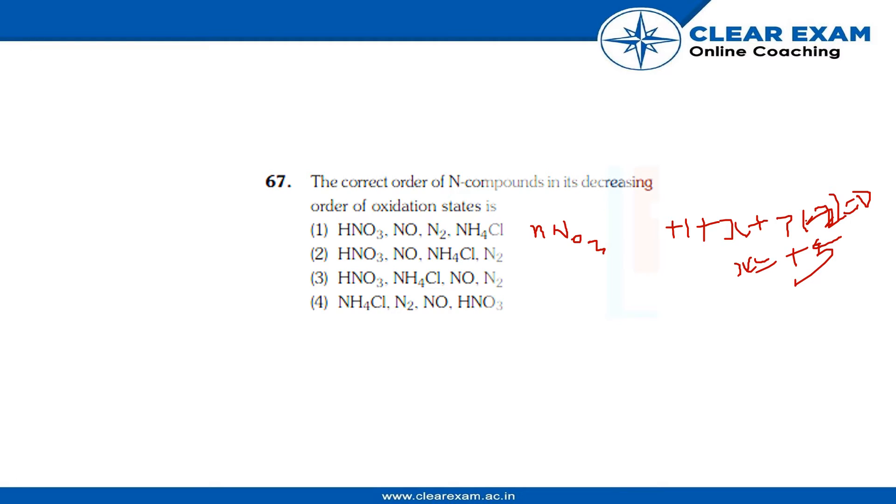So the value of X is +5. And if you see NO, the oxidation state for N we take as X, and the oxidation state for O we all know is -2.